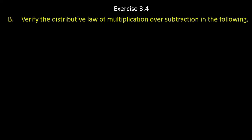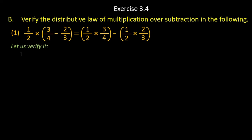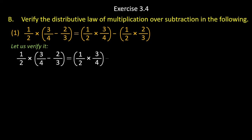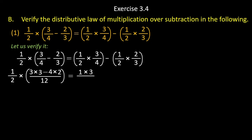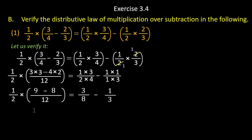Now question B of exercise 3.4: verify the distributive law of multiplication over subtraction. Problem number one — let us verify it. Here in the same way, you have to first solve the bracket. In the bracket: 3 upon 4 minus 2 upon 3. Find the LCM of 4 and 3, it is 12. Same way you solve it, numerators multiply each other. This is very simple, you may do it yourself.